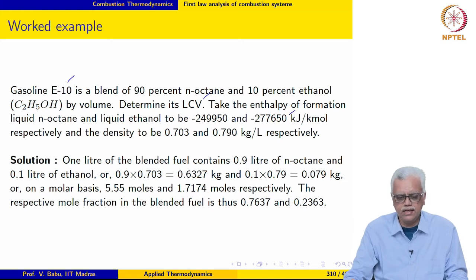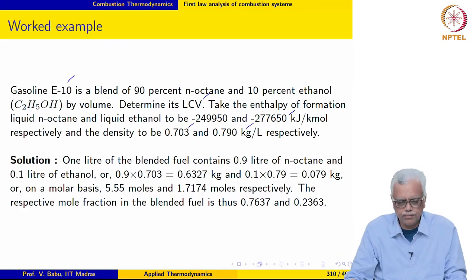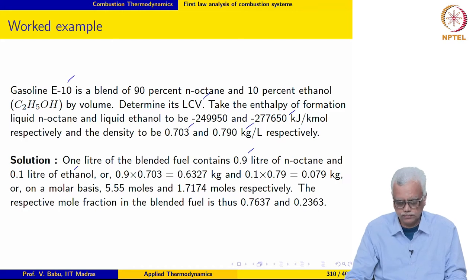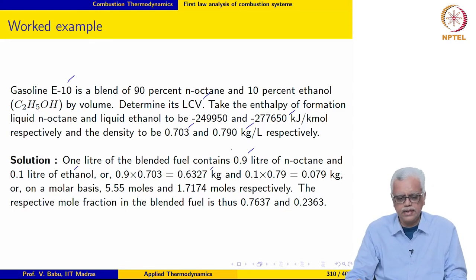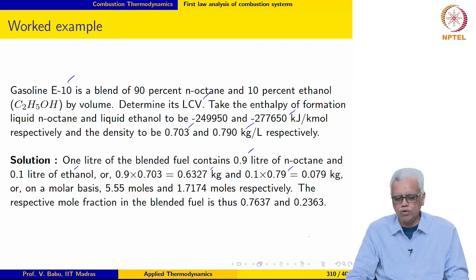The enthalpy of formation of liquid N-octane and liquid ethanol are given, and the specific gravity of the two fuels in the blend are also given. So 1 litre of the fuel contains 0.9 litre of N-octane and 0.1 litre of ethanol. Multiplying by the density, 1 litre of the blended fuel contains 0.6327 kg of N-octane and 0.079 kg of ethanol. On a molar basis, this works out to 5.55 moles of N-octane and 1.7174 moles of ethanol per litre of blended fuel.